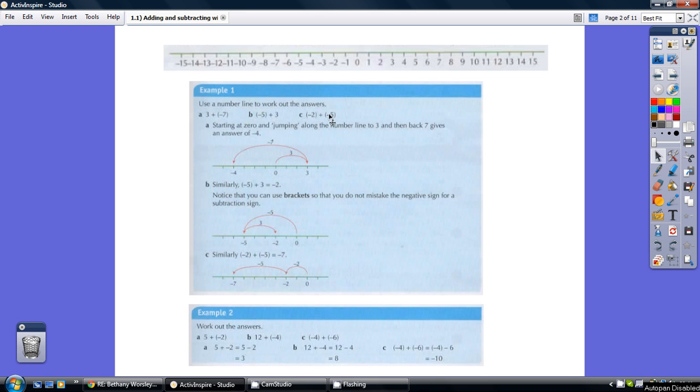And the third one, we're starting on minus 2, and on this occasion we're adding on a minus 5. So that's going back another 5. That's minus 2, and then a minus 5. So 1, 2, 3, 4, 5, takes us to minus 7.